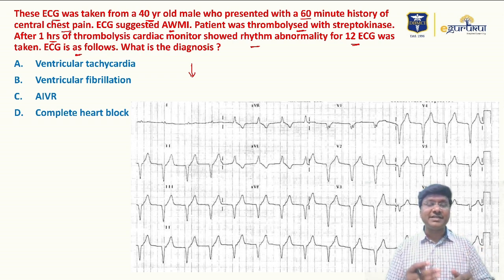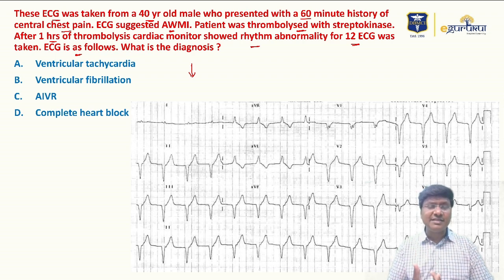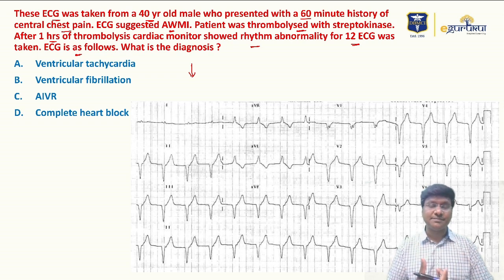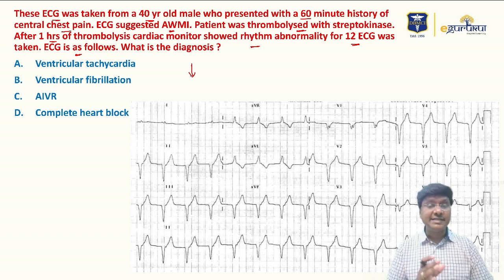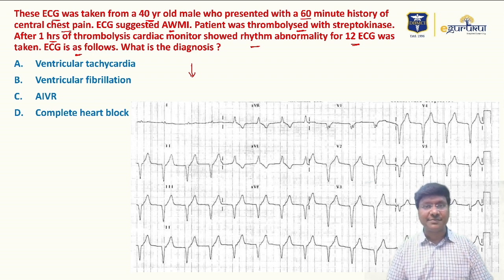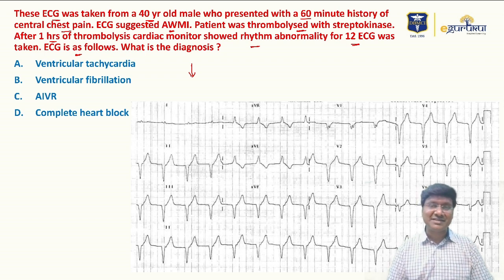The diagnosis options are: ventricular tachycardia, ventricular fibrillation, AIVR (accelerated idioventricular rhythm), and complete heart block. All these options are expected complications in a patient with myocardial infarction. Seeing a rhythm abnormality in a thrombolyzed MI patient is a very alarming situation, and you have to handle the patient very carefully.